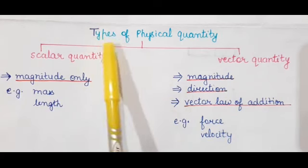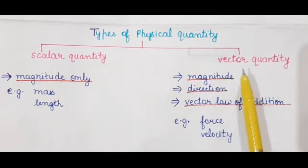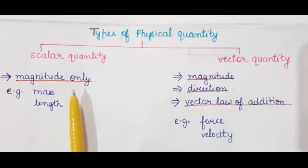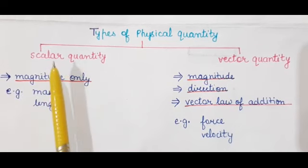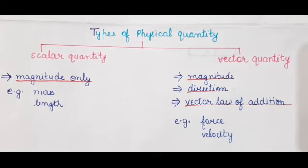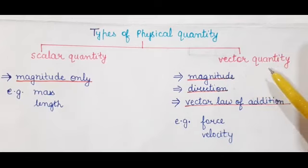What are the types of physical quantities? There are two types: scalar quantity and vector quantity. A scalar quantity is one that has magnitude only — for example, mass and length. A vector quantity is one that has magnitude, direction, and also follows the vector laws of addition. These three conditions must be satisfied for a vector quantity. Examples of vector quantities are force and velocity.